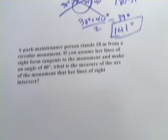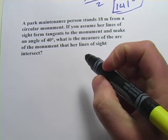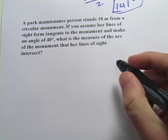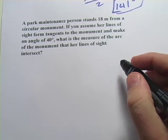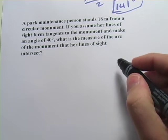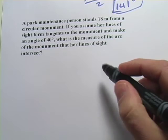Alright let's try this next one. This one's a little more complicated. It says a park maintenance person stands 18 meters from a circular monument. If you assume her lines of sight form tangents to the monument and make an angle of 40 degrees, what is the measure of the arc of the monument that her lines of sight intersect? Okay that's pretty complicated. Let's think about this.